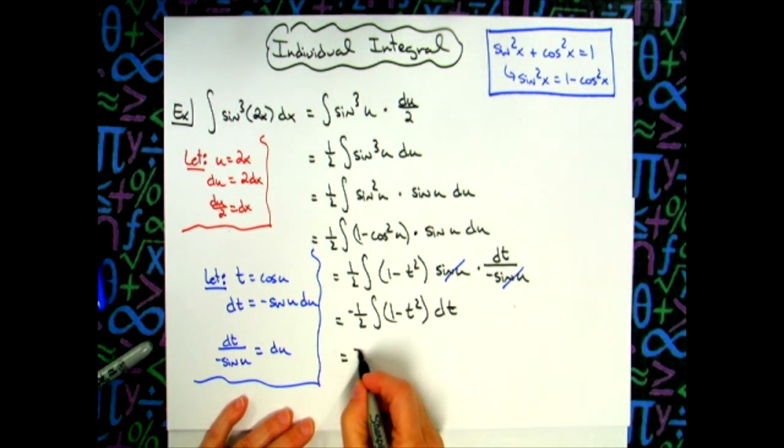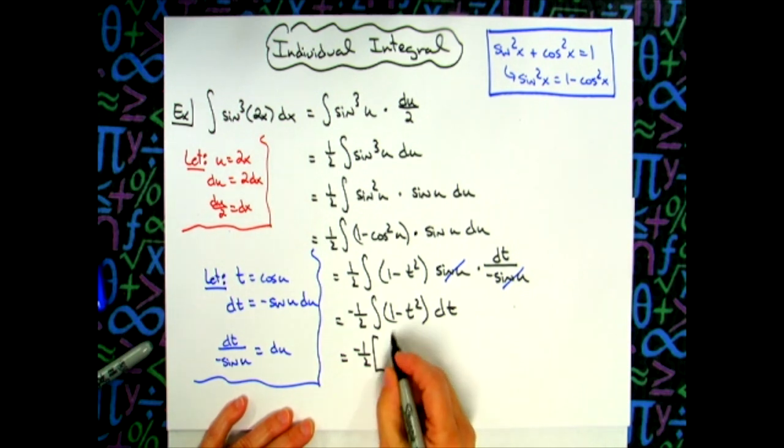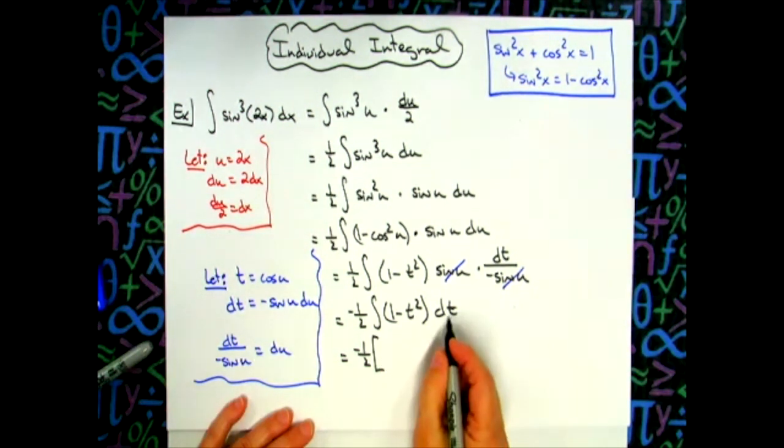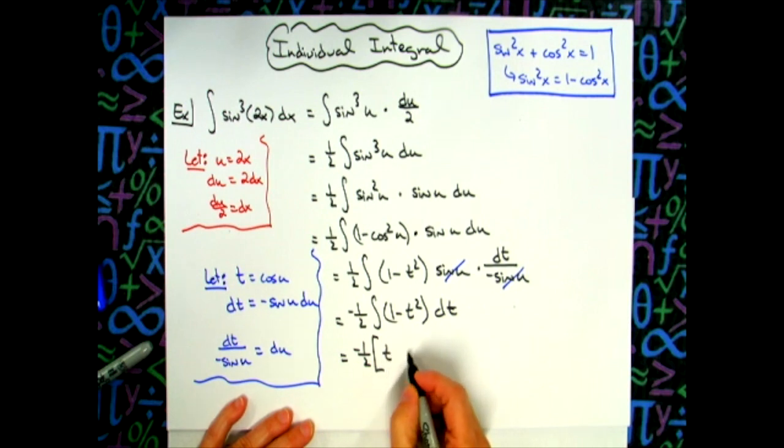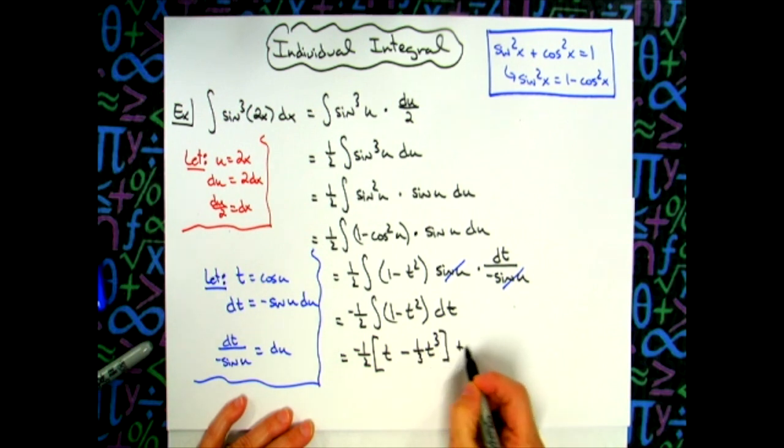So doing the integration, I'll have negative one half. Just go ahead and put a bracket in there. Integrating one with respect to that t right there, we'll have a t. And then minus, adding one to my exponent, I'll have t to the third with one third in front, plus c.